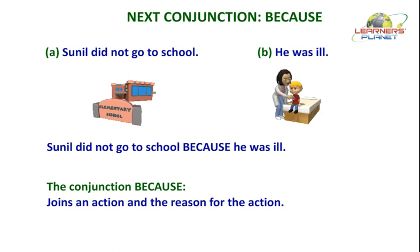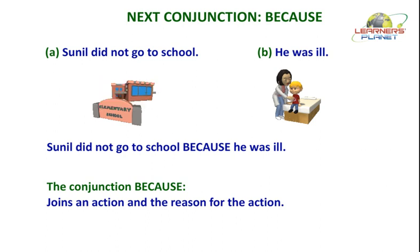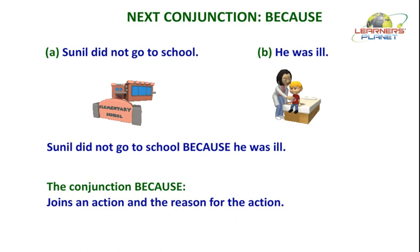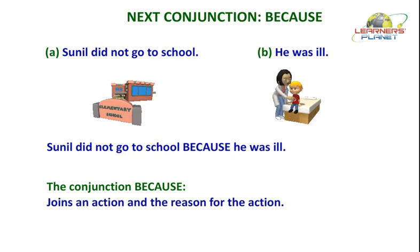Let us now look at some more conjunctions. Look at the sentences given here. Sentence A tells us that Sunil did not go to school, and sentence B tells us the reason why he did not go to school. The conjunction used to join such sentences is BECAUSE. To join an action and the reason for the action, the conjunction BECAUSE is used. See the other examples and understand the use of the conjunction BECAUSE.